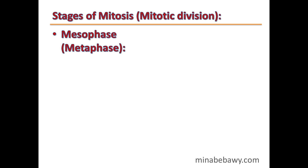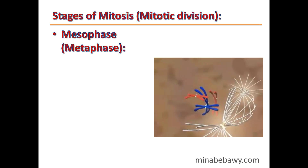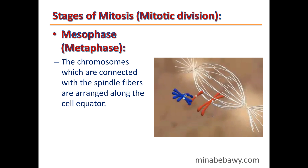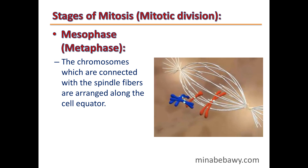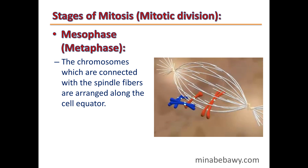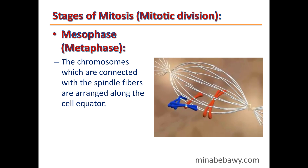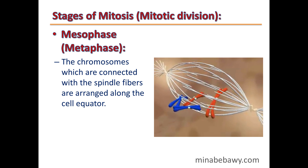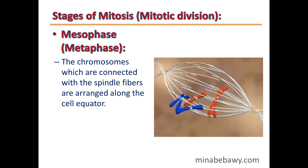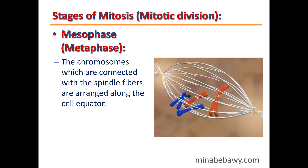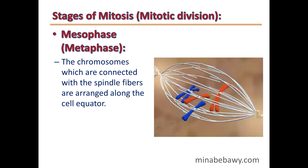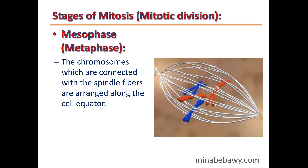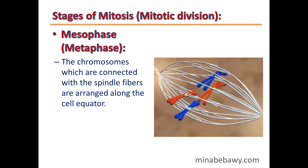By the end of prophase we reach metaphase. In this phase, the chromosomes — connected to the spindle fibers through the centromere — are arranged along the cell equator. The chromosomes are perfectly arranged along the cell equator with the help of spindle fibers connected to their centromeres.